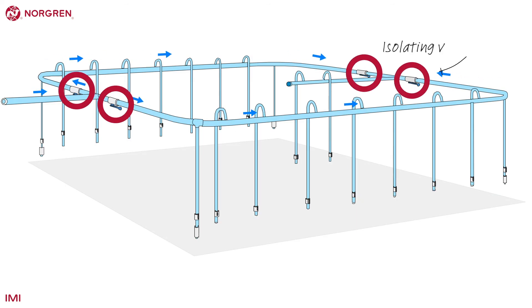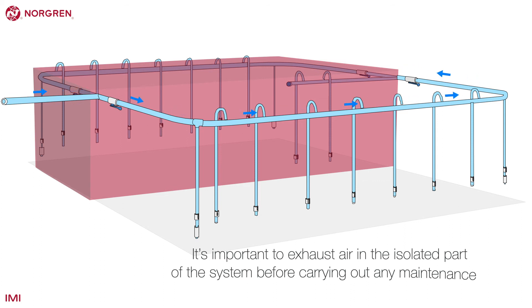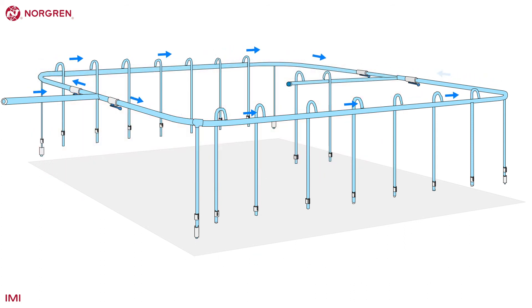There are four valves in this visualization. They are located in such a way to isolate half of the ring main, allowing maintenance or repair while the other half continues operation. It's important to exhaust air in the isolated part of the system before carrying out any maintenance.